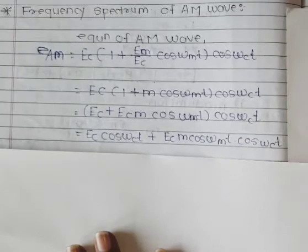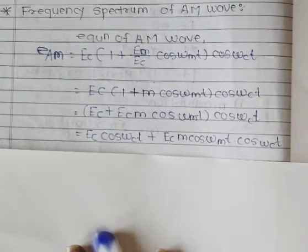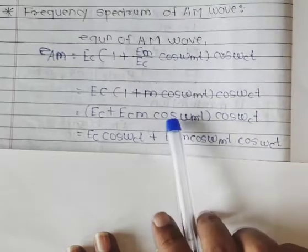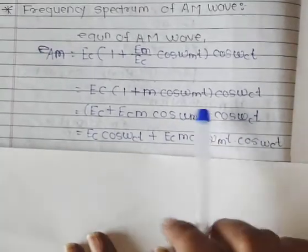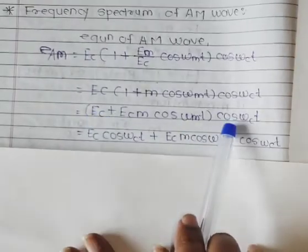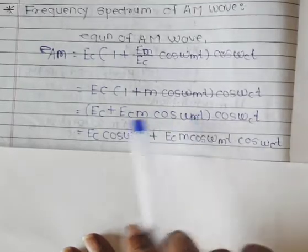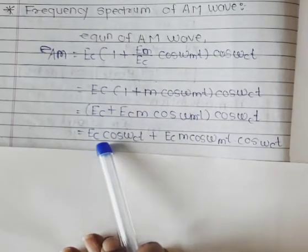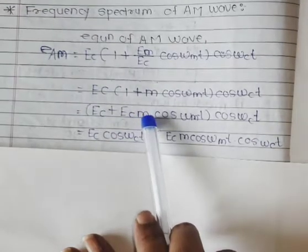This is cos(ω_c*t). I will multiply this whole bracket. What will happen? cos(ω_c*t) will be multiplied by the whole term. The result will be E_c*cos(ω_c*t) plus the second term.